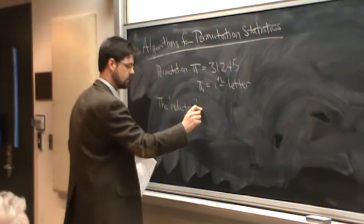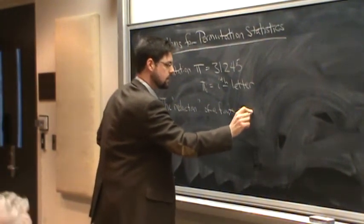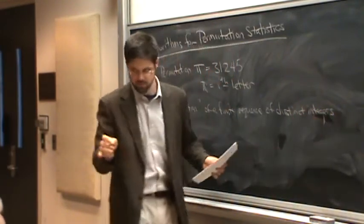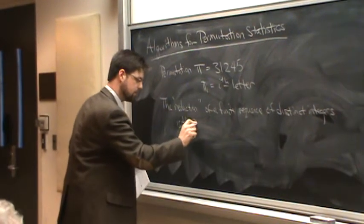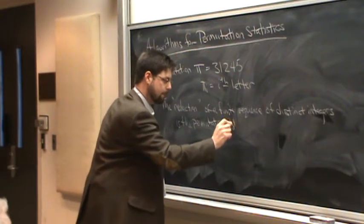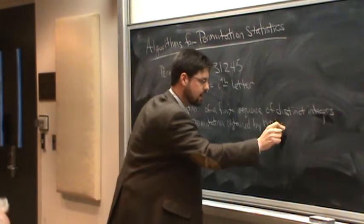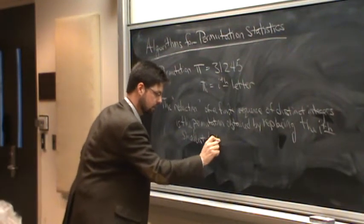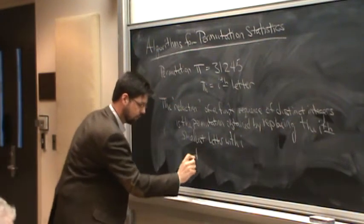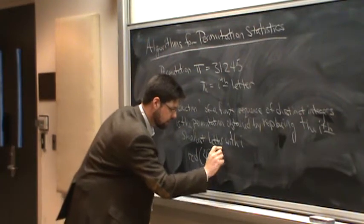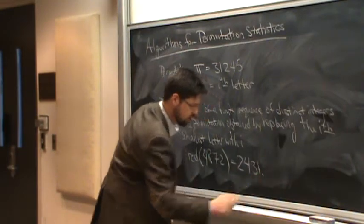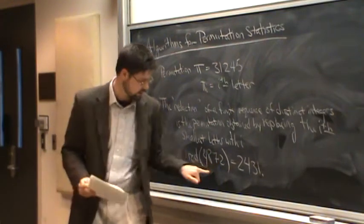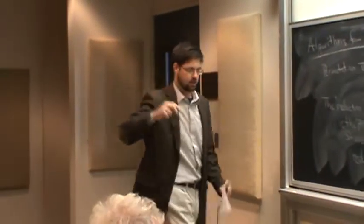The reduction of a finite sequence of distinct integers is the permutation obtained by replacing the i-th smallest letter with just i. For example, the reduction of 4, 8, 7, 2 is 2, 4, 3, 1. We replace the 2 with a 1, it's the smallest. The 4 becomes a 2, the 7 becomes a 3, and 8 becomes a 4. We sort of smash everything down to form a unique permutation.